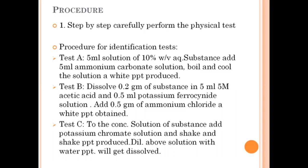The principle of the test is based on the reaction of various ions and radicals with specific inorganic or organic reagents. Calcium gluconate is mainly used in electrolyte replacement therapy. The procedure for the identification test involves a physical test followed by three identification tests — Test A, Test B, and Test C — from which you can conclude whether the given product is calcium gluconate or not.